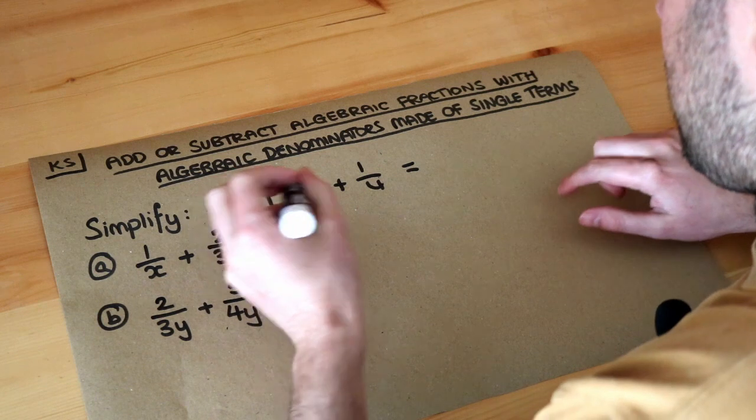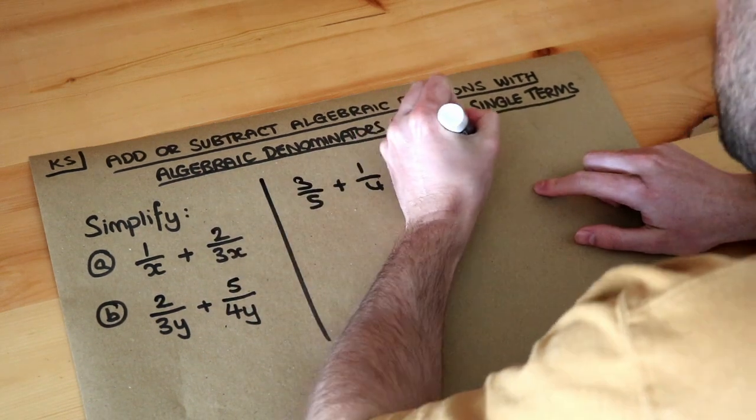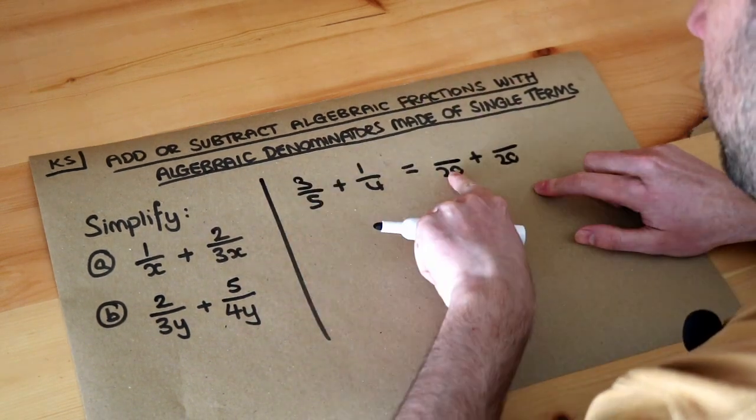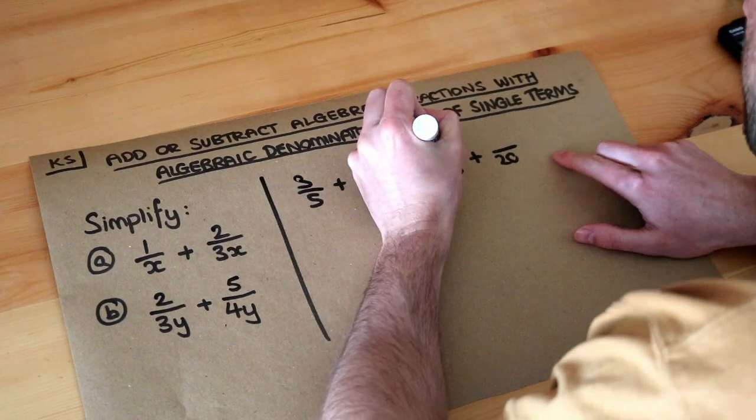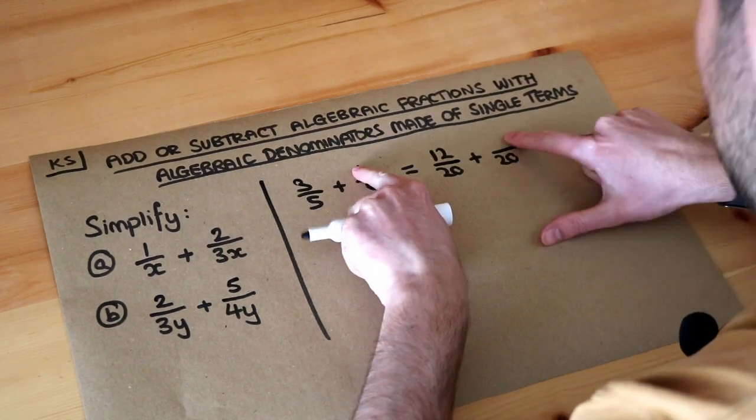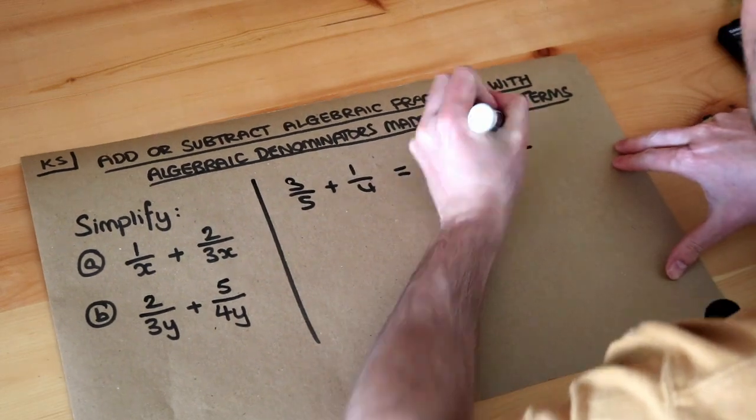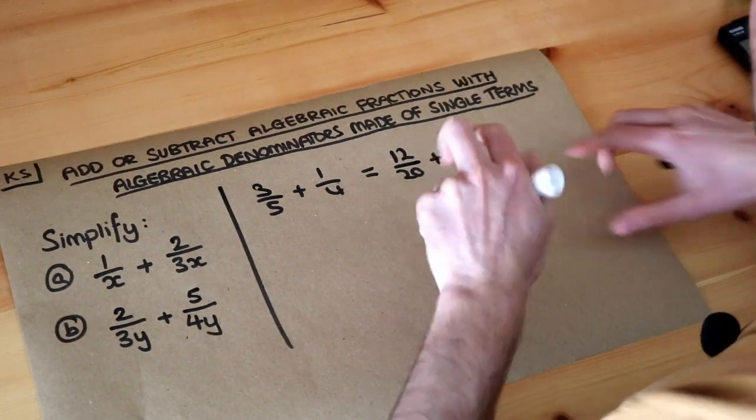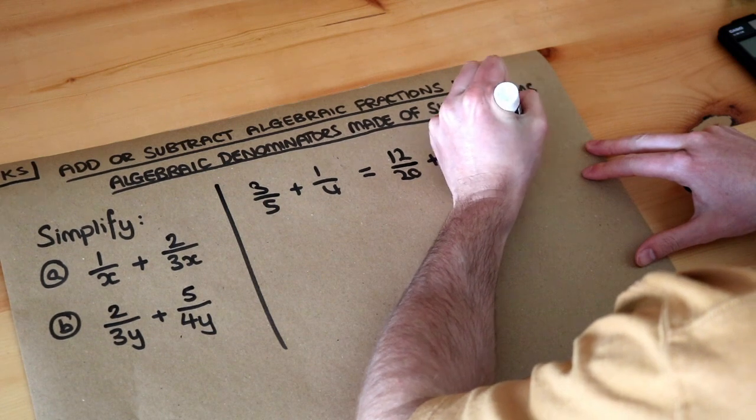The three-fifths became four times bigger, so that's 12 twentieths. The quarter became five times bigger, so that's 5 twentieths. Now because you've got the same denominators, you can add the numerators and get 17 twentieths.